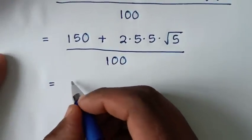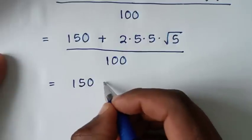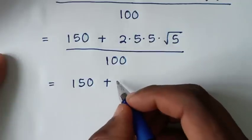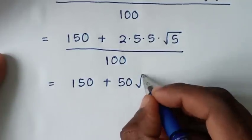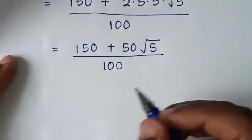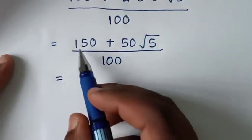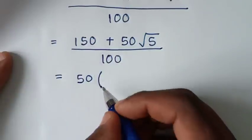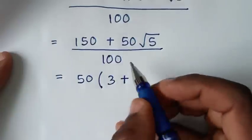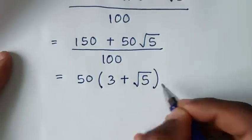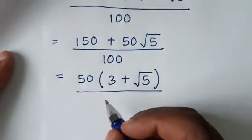In the next step, 5 times 5 is 25, and 25 times 2 is 50, giving 150 plus 50 square root of 5, over 100. We factor 50 from the numerator: 150 divided by 50 is 3, and 50 divided by 50 is 1, so we get 50 times (3 + √5), over 100.